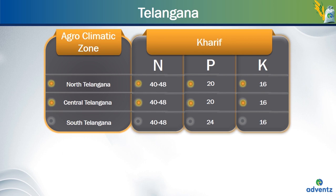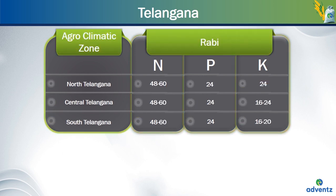For the rice crop planted in the Kharif season in South Telangana zone, the amount of nitrogen and phosphorus is still the same — nitrogen at 40 to 48 kgs per acre — but the amount of potassium needed changes to 24 kgs per acre.